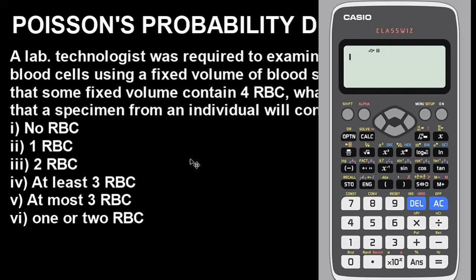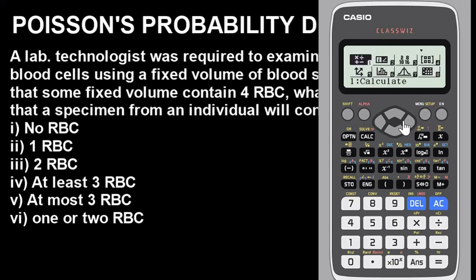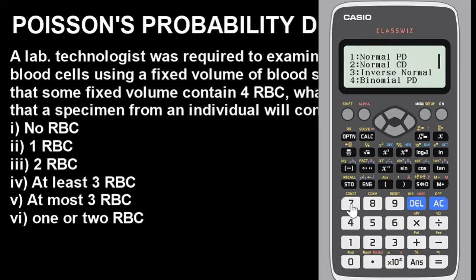The next thing you have to do is put the calculator in the right mode to solve distribution problems. Press Menu to select the mode and go to Distribution, which is option 7. Once you press it, it brings you to that section. Now go downward using the downward button.